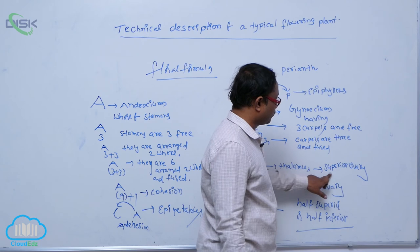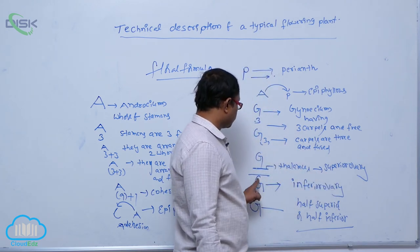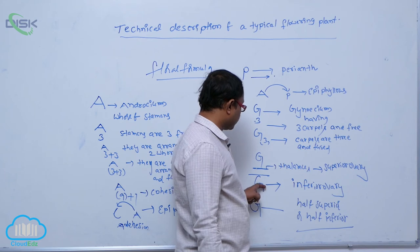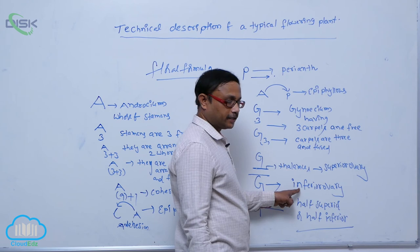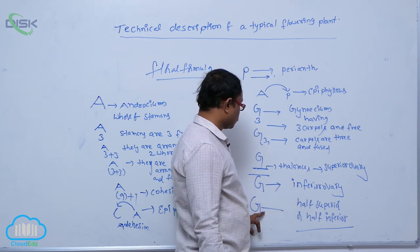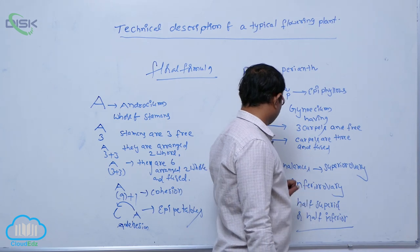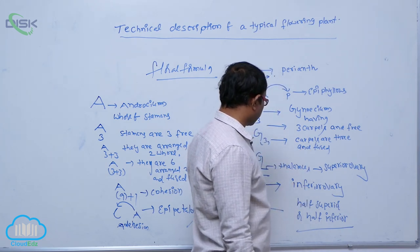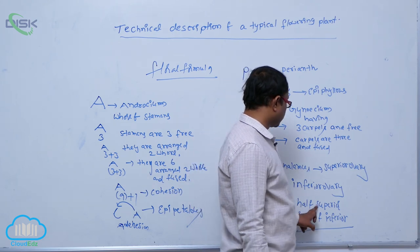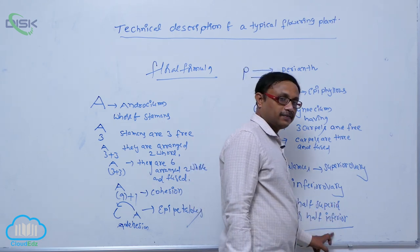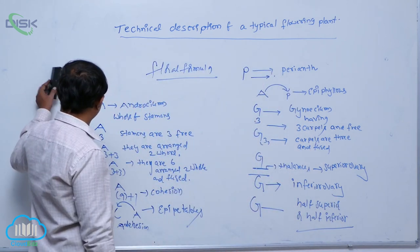If G is present at the center relative to the thalamus, it indicates an inferior ovary. Below the thalamus indicates an inferior ovary. If the line is at the center with the thalamus at the center relative to the gynoecium, that is known as half superior and half inferior ovary. This is the floral formula.